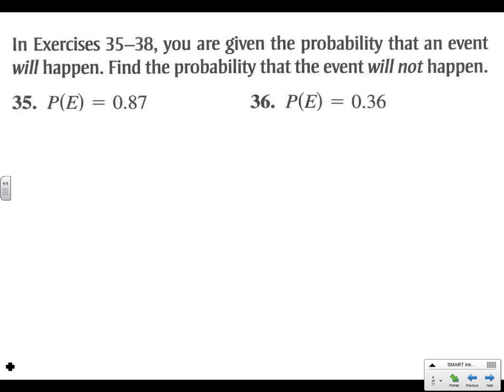Problem 36: We are told that the probability of something happening is 36%. The probability that it won't happen is the complement, 1 minus 0.36. And so if you do that math, you end up with 0.64, or a 64% chance that it will not happen.